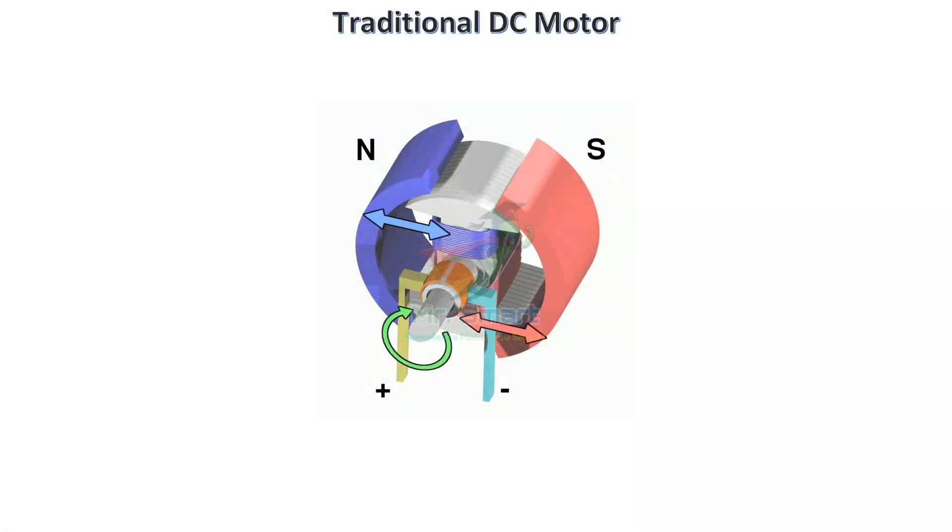In traditional DC motors, the stator provides a constant magnetic field with the help of permanent magnets. The rotor, technically called an armature, rotates due to electromagnetic force created by the flow of current over them.